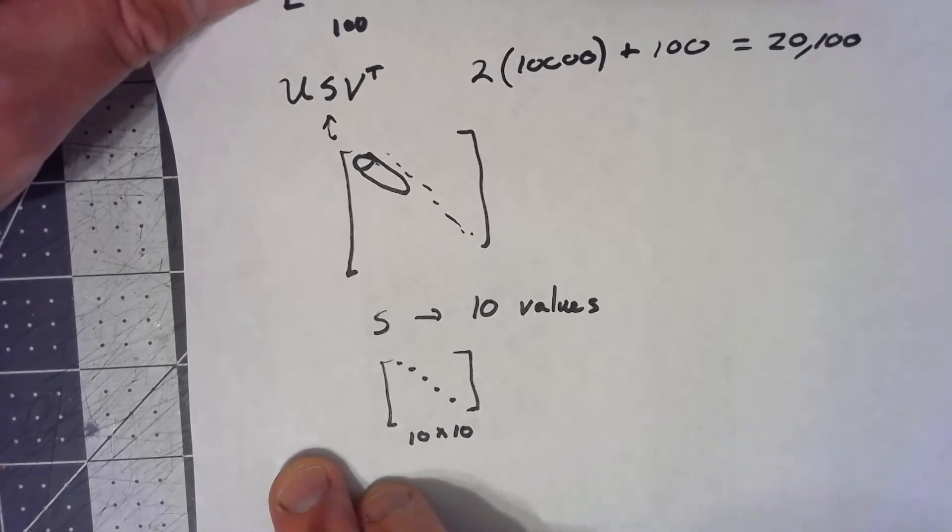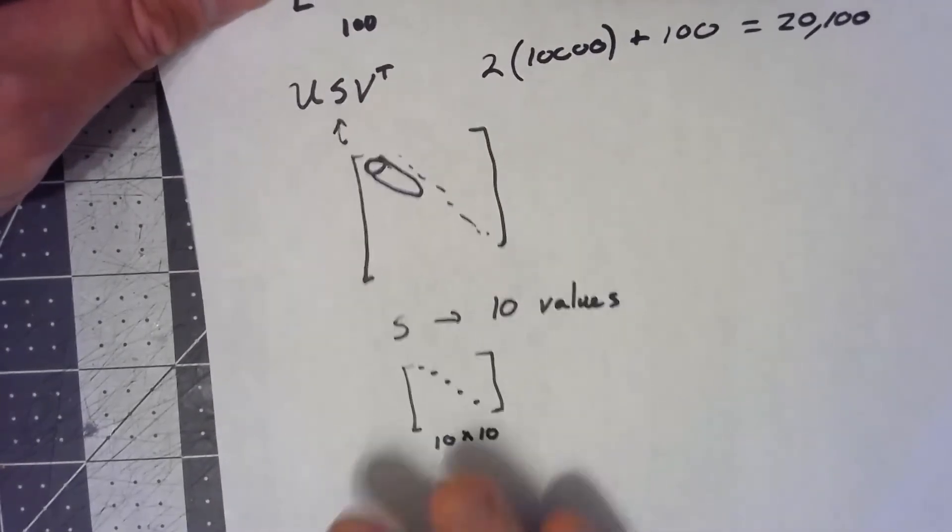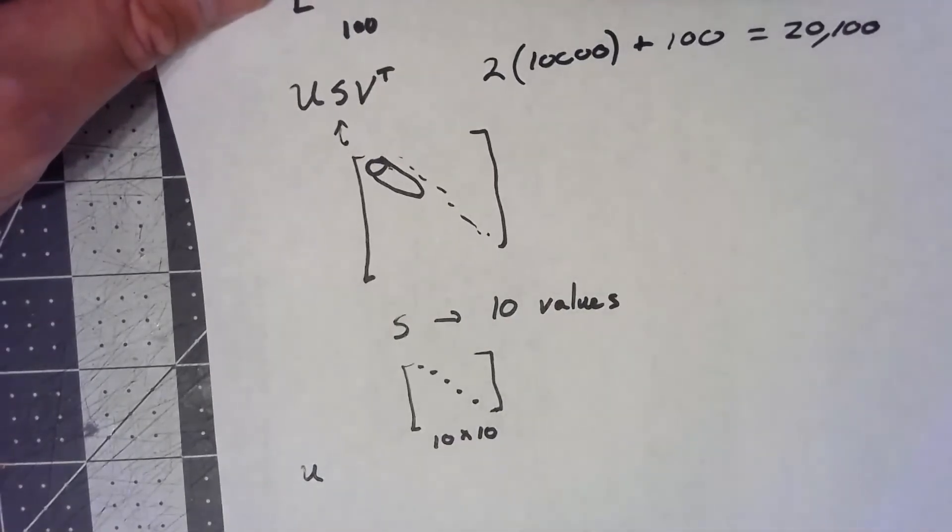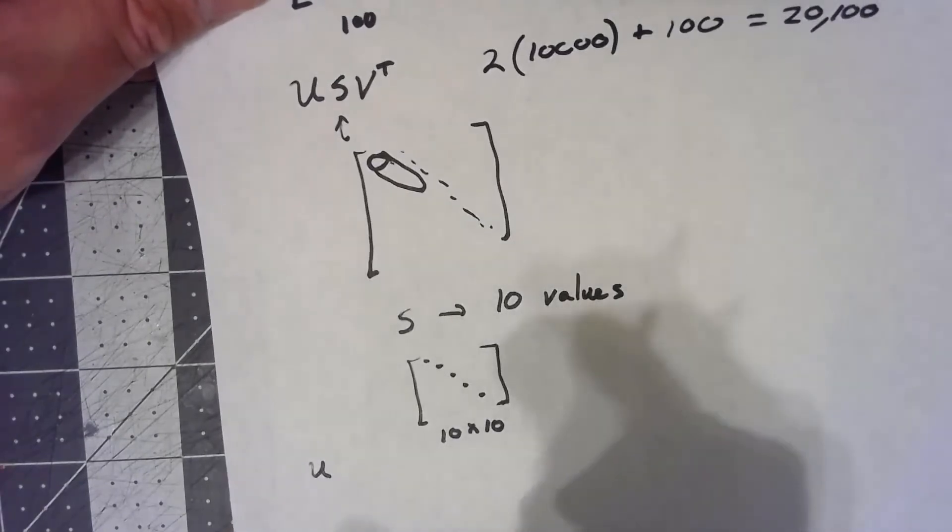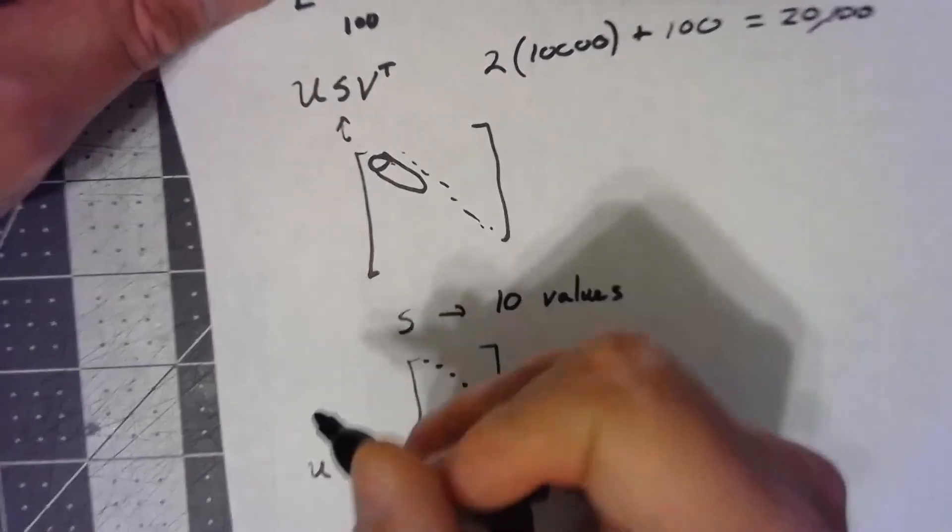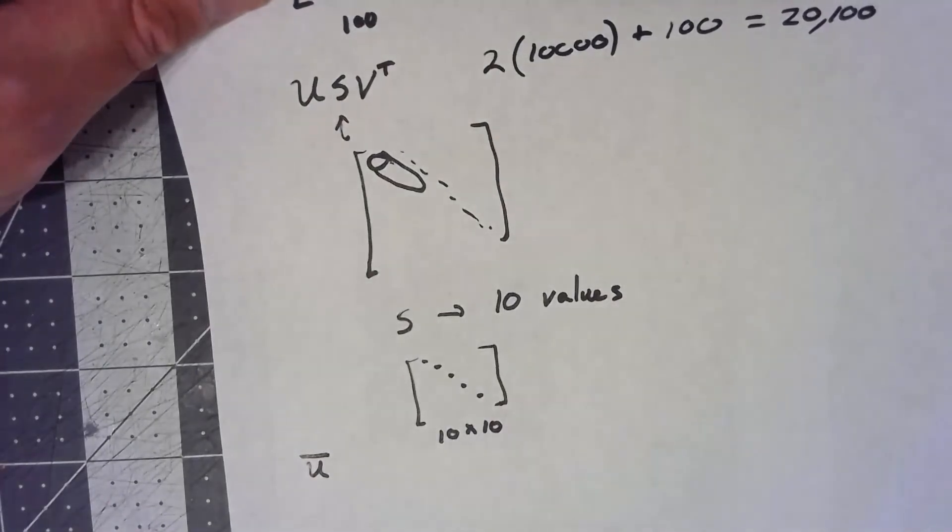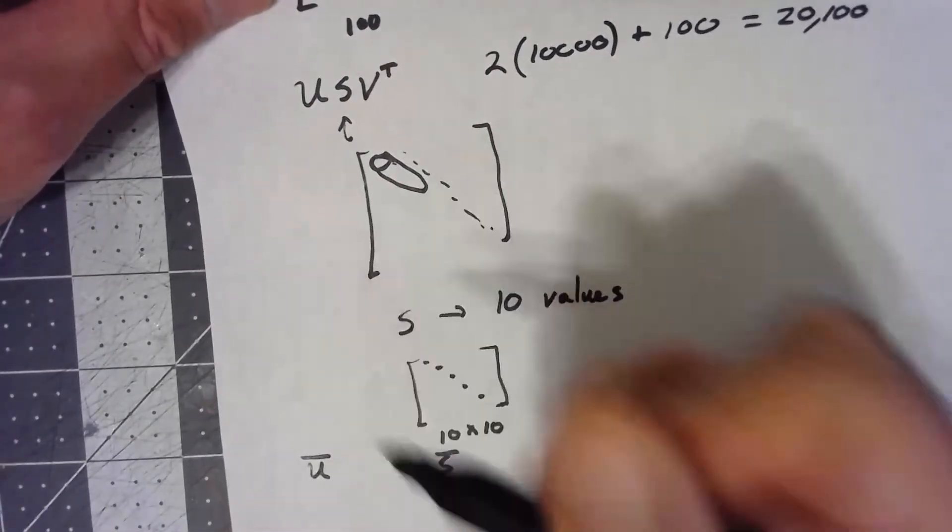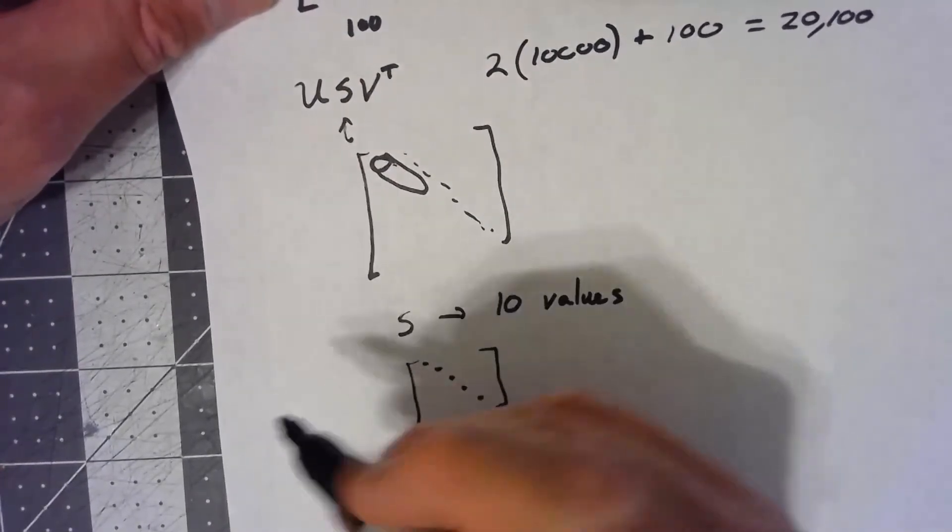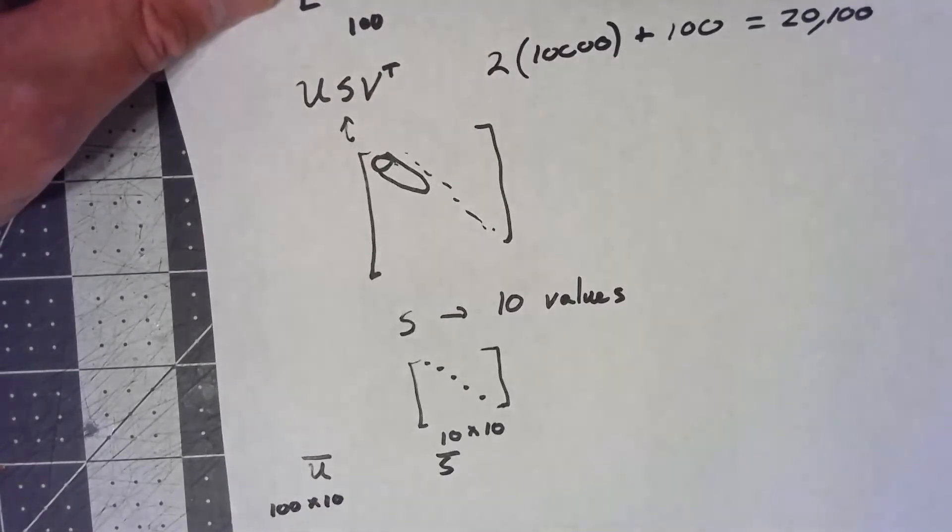So what does the U have to be? Well, because we are still trying to get our original matrix back, or at least an approximation to it, the U, we're going to end up taking the first 10 columns. So my U, and we'll call it U bar for the part of it that we care, we're taking the first 10 columns, so we're going to end up with here a 100 by 10 matrix.